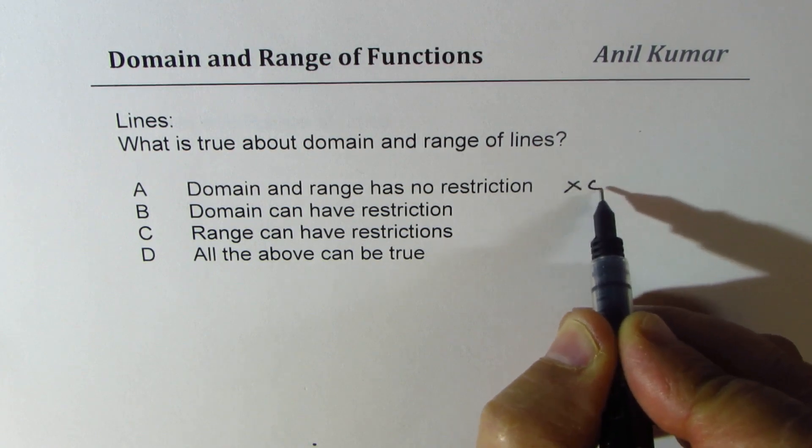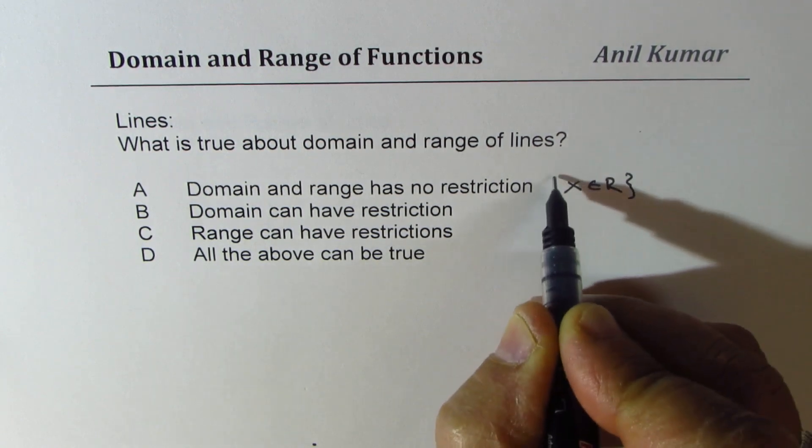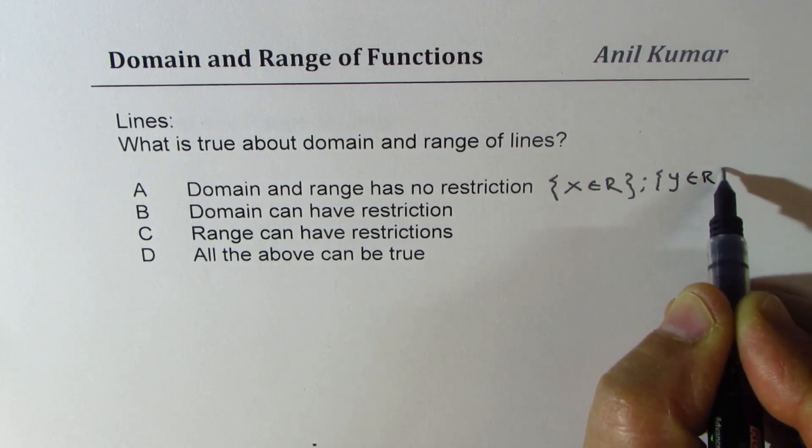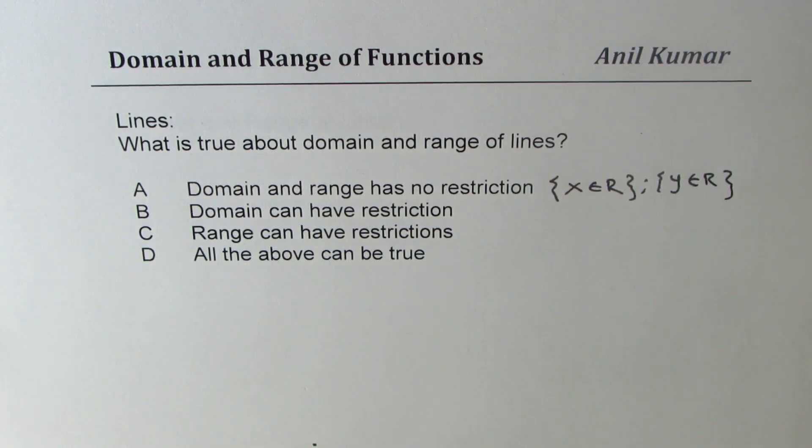That is to say X belongs to real numbers for domain and Y belongs to real numbers for range. Option B is domain can have restrictions. C is range can have restrictions, and D is all the above can be true.